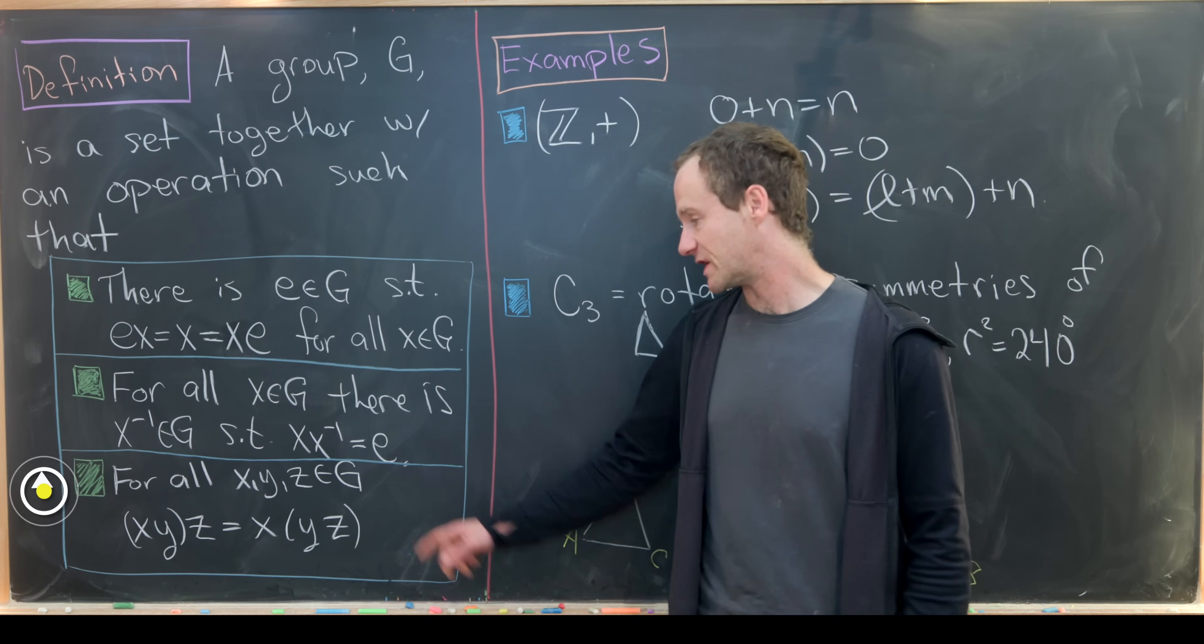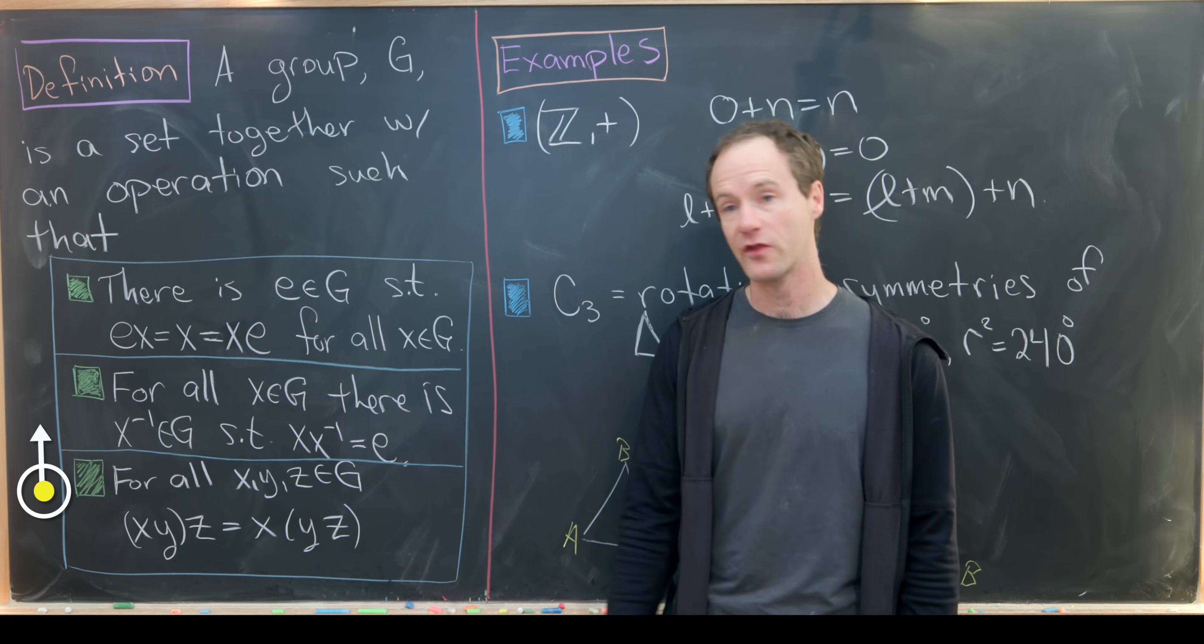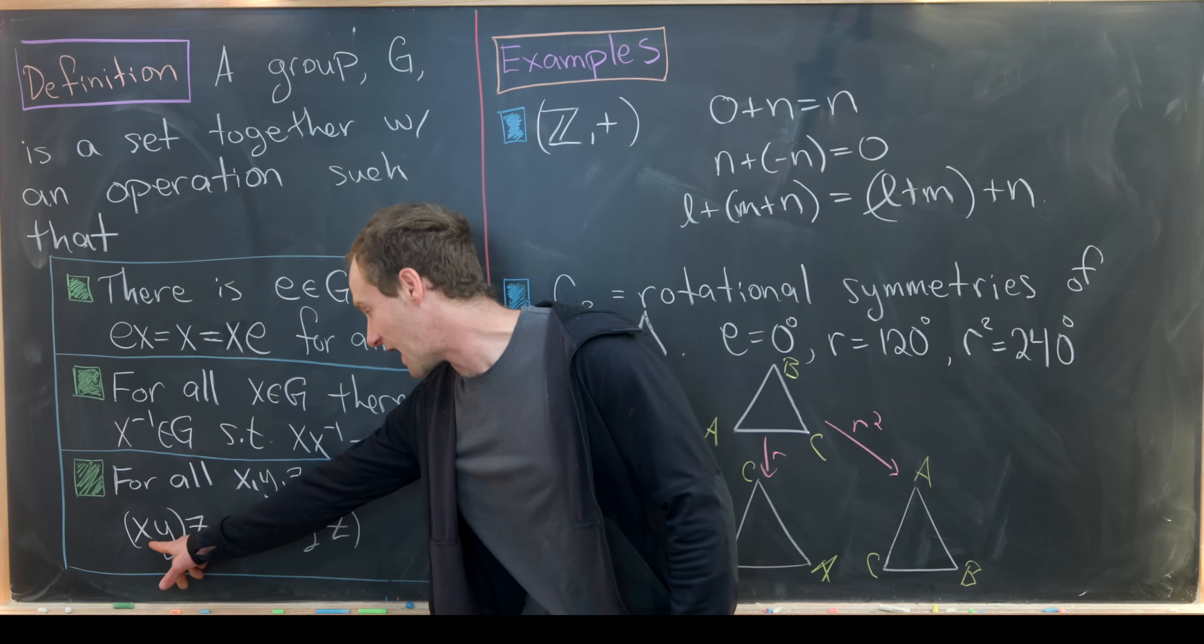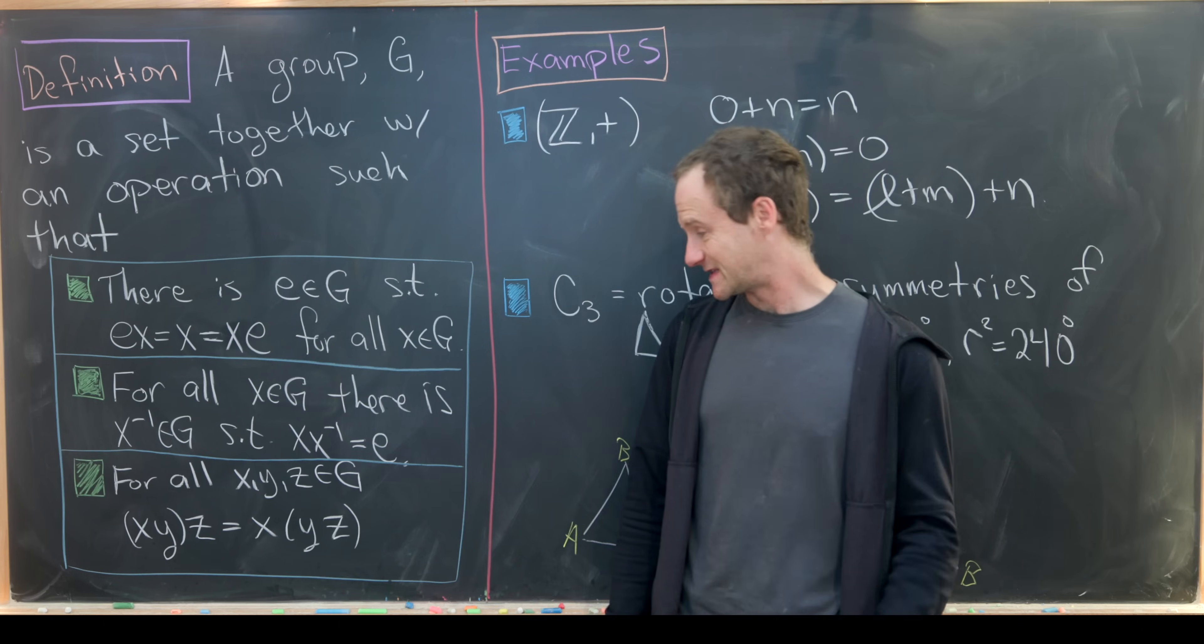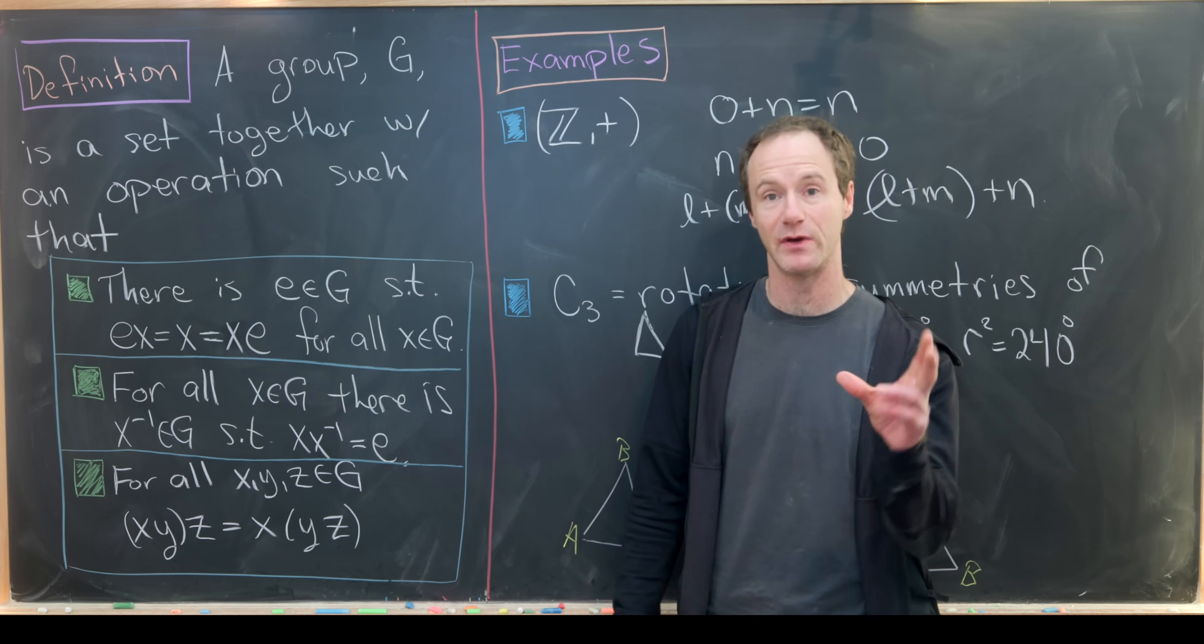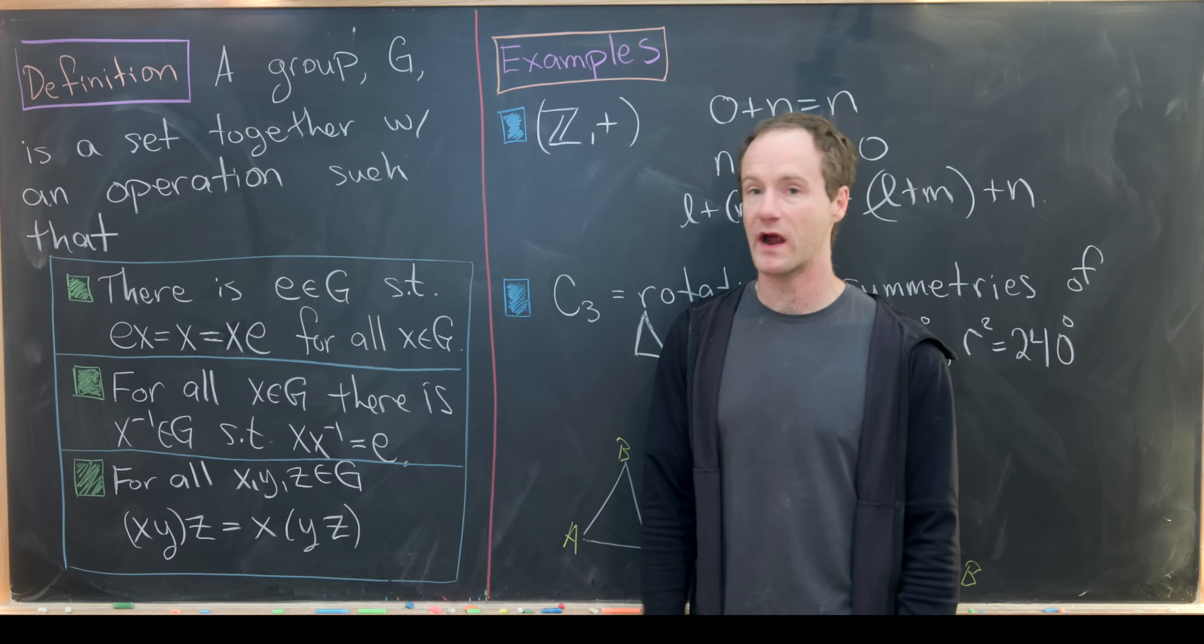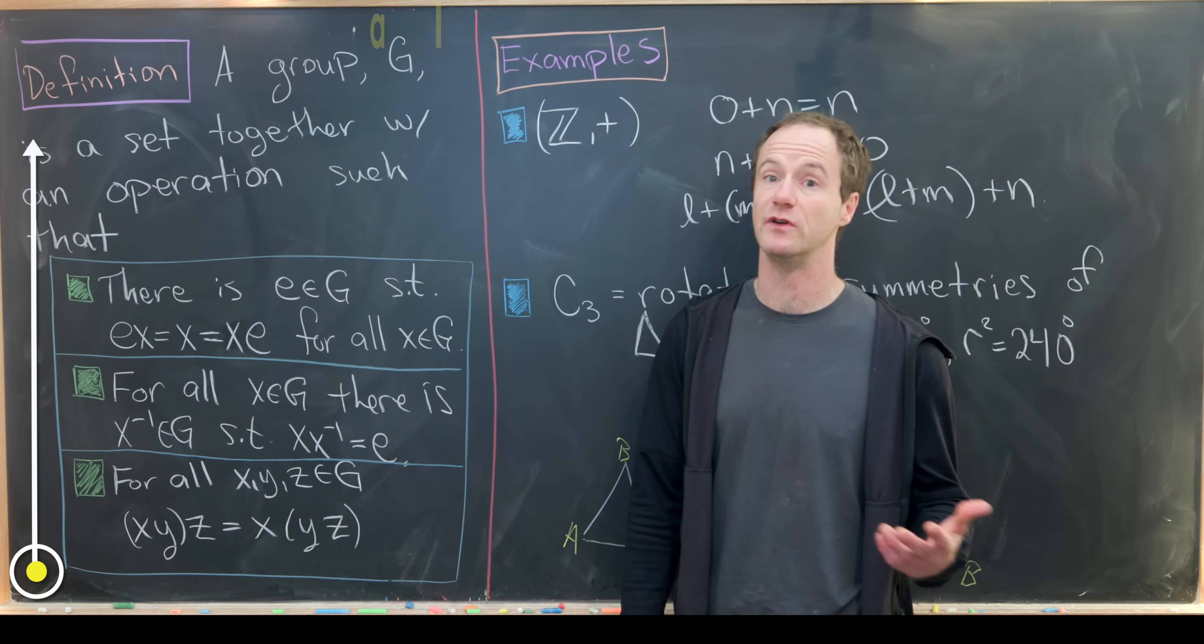And then finally, we have an associativity condition for our operation. So for all X, Y, and Z, if you combine X and Y and then combine Z, you get the same thing as combining Y and Z and then combining X, as long as we do this in the same order. Notice that we do not require our group to be commutative. As we'll see later, not all groups are commutative or abelian.